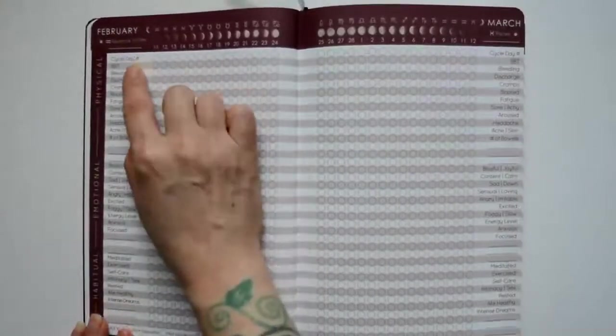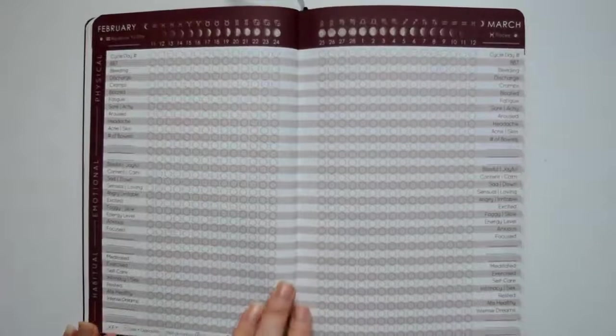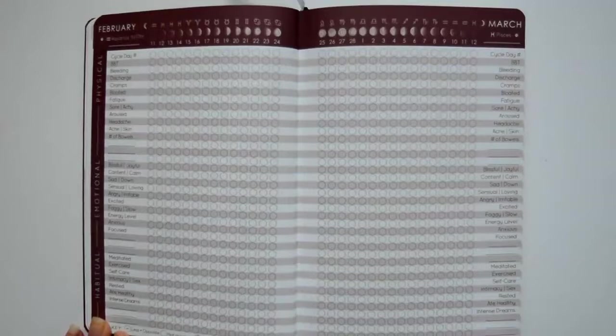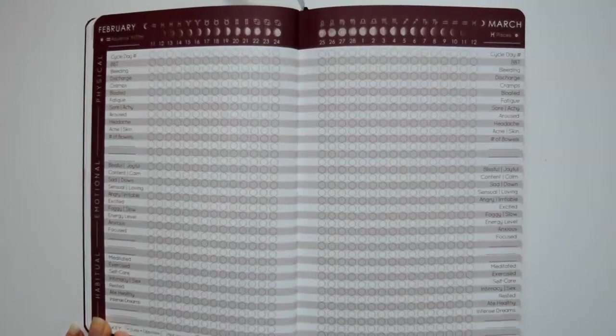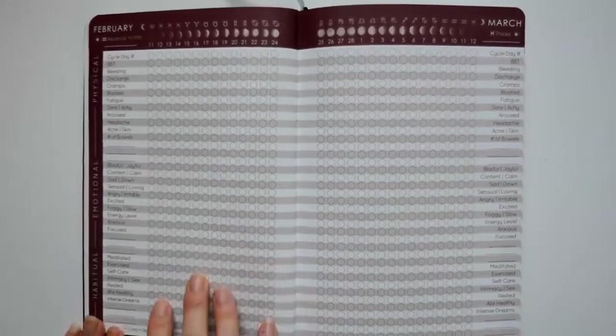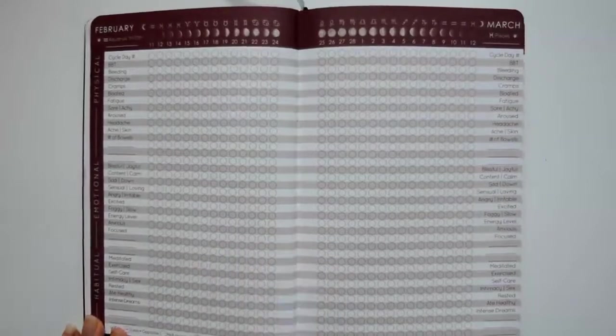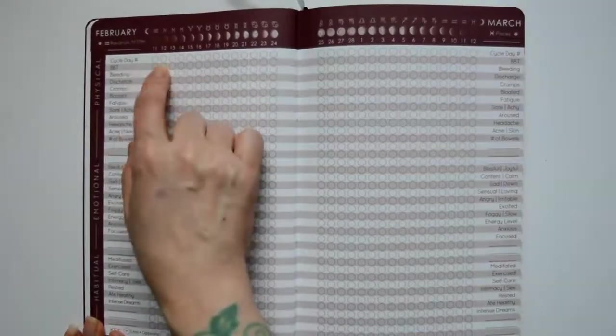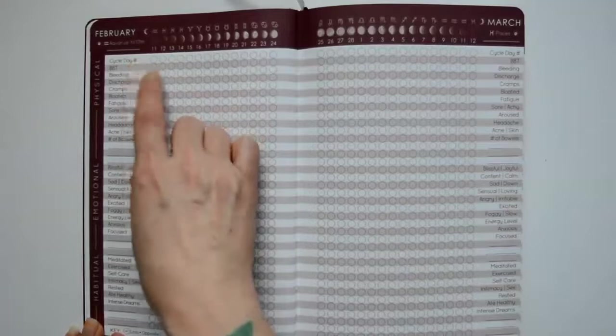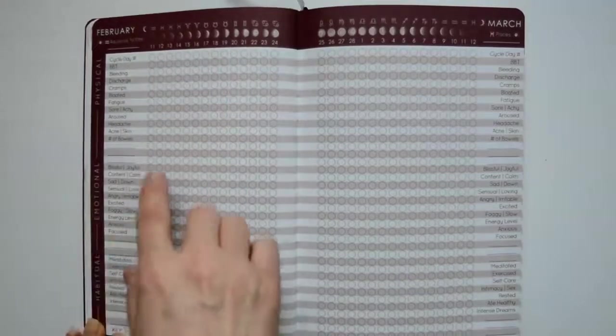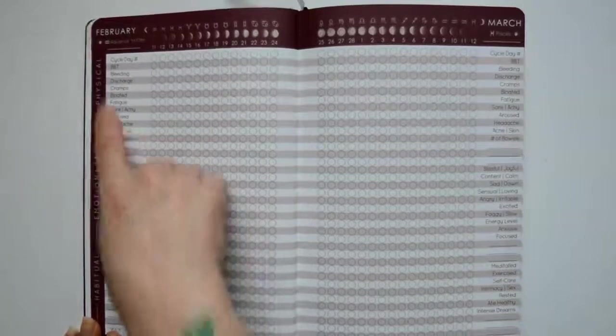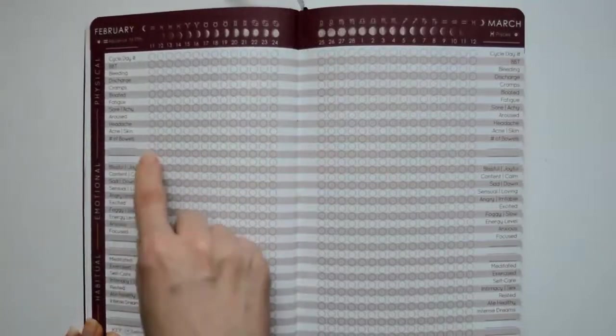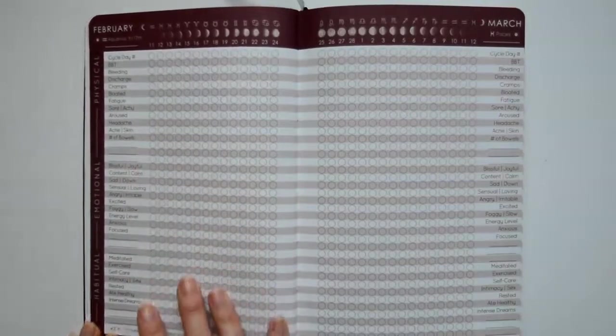There's cycle day, basal temperature. The basal temperature is something that you do in natural fertility awareness when you take your temperature every day. That's how you can tell if you're ovulating or which phase of your cycle that you're in. This book helps you organize and track that information. That's the temperature. And then if you were bleeding that day, discharge, cramps, bloating, fatigue, and then all these other things that are symptoms. This top part is for physical symptoms. This is for emotional symptoms like your mood. And then there's a couple sections here for filling in your own in case they don't have one that you want.